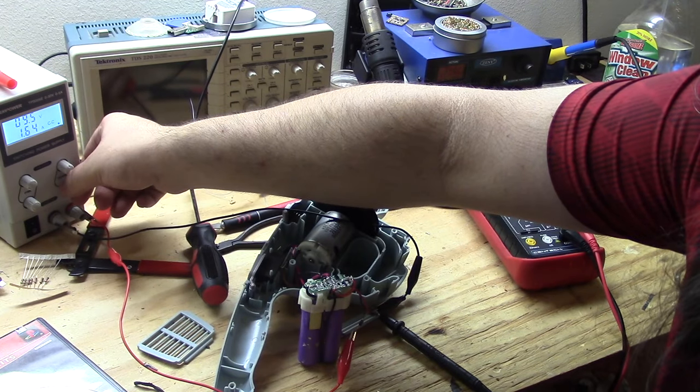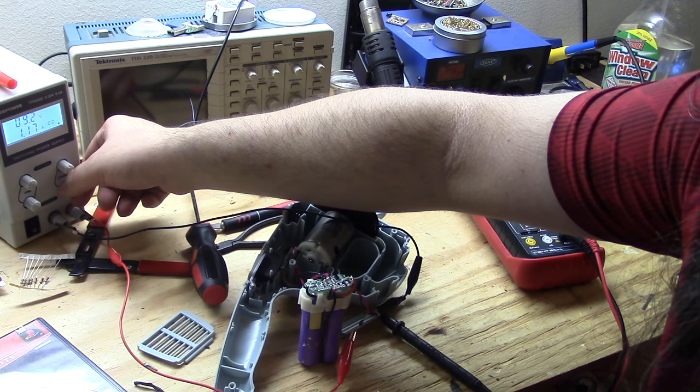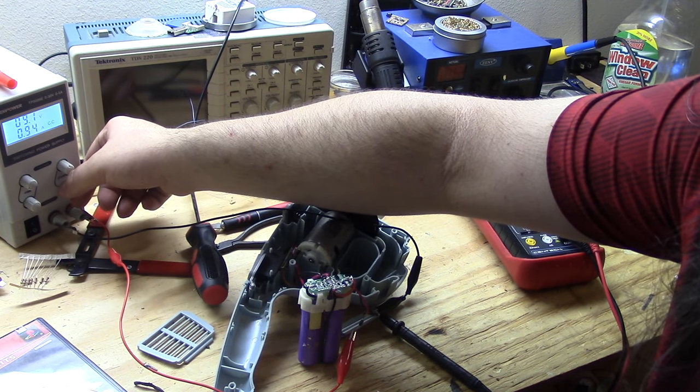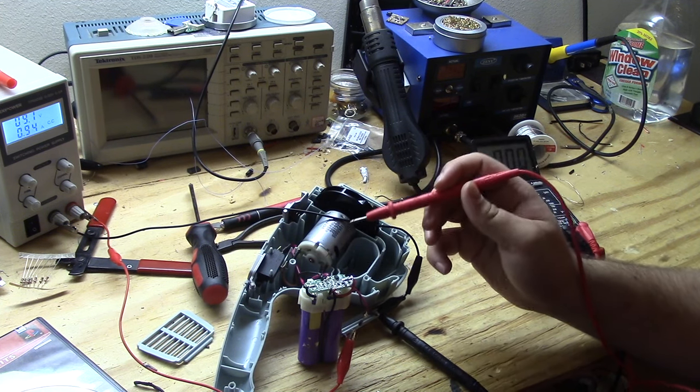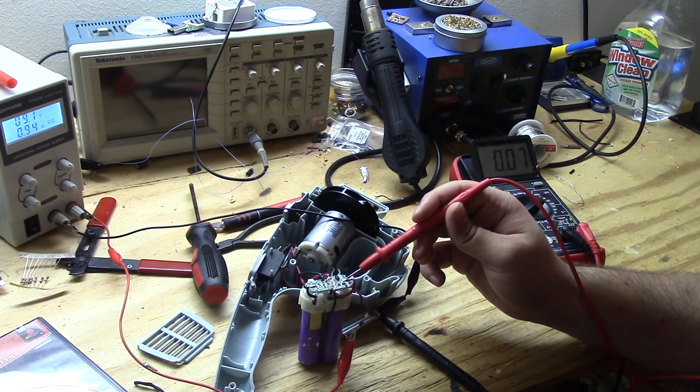Alright, so the reverse polarity protection diode checks out. So now it's time to hook up this charge controller to my bench supply and see if I can get the batteries to charge. As you can see, it's already drawing current, which is a really good sign.